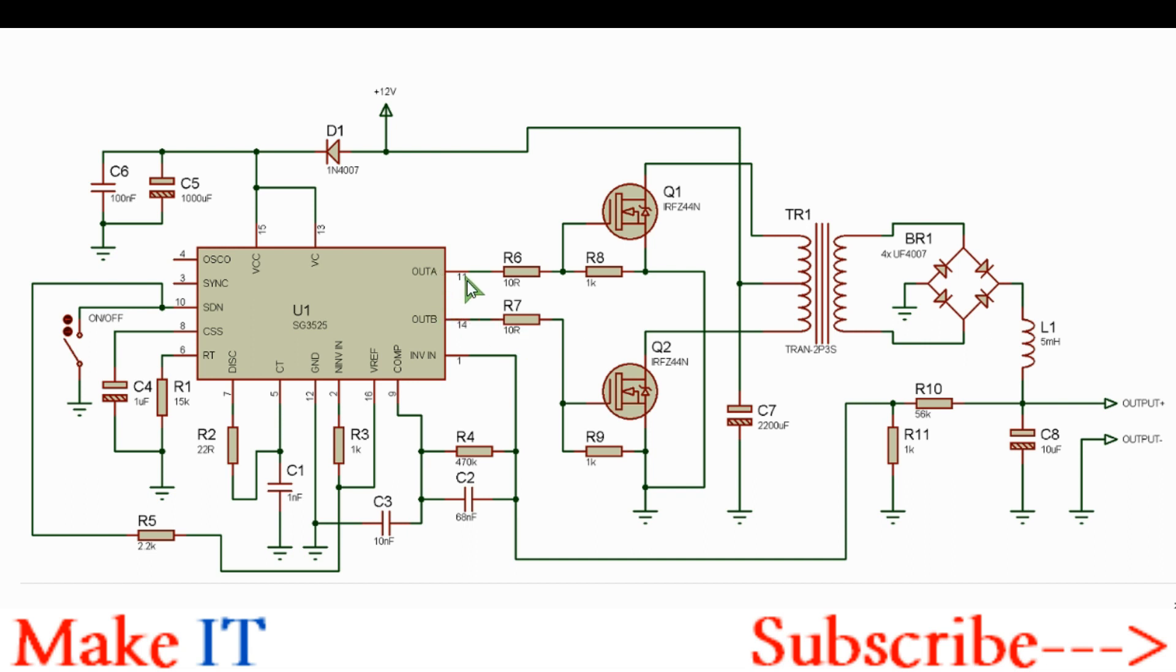When pin 11 is high, this MOSFET will be turned on and current will flow through this half winding of the transformer to ground as shown here. When this turns off and output B is high, the other MOSFET will conduct and current will flow through the other half winding of the power transformer.